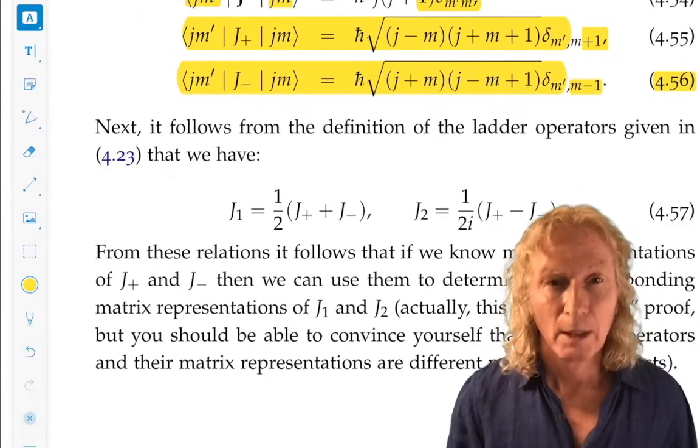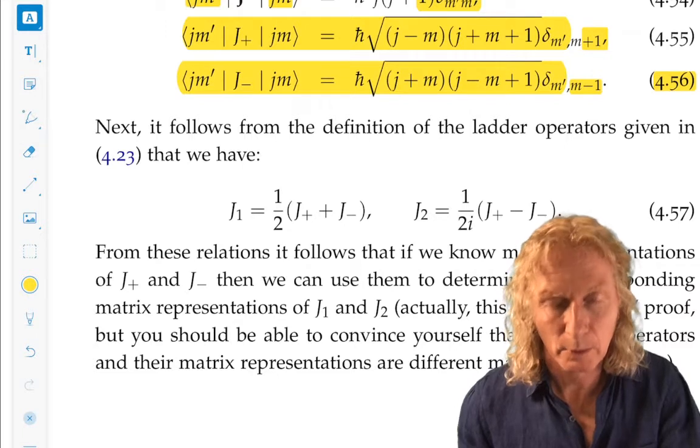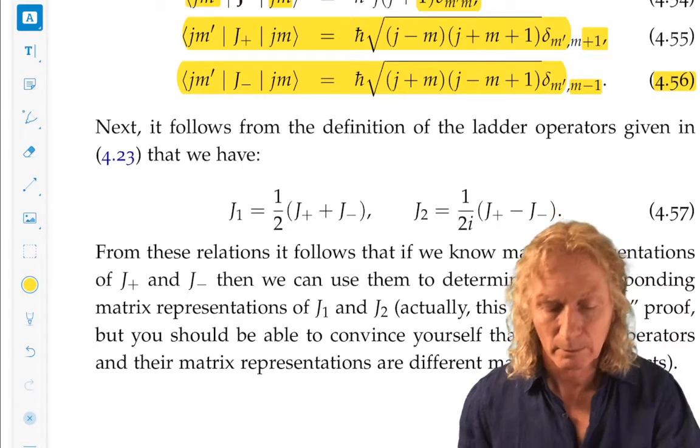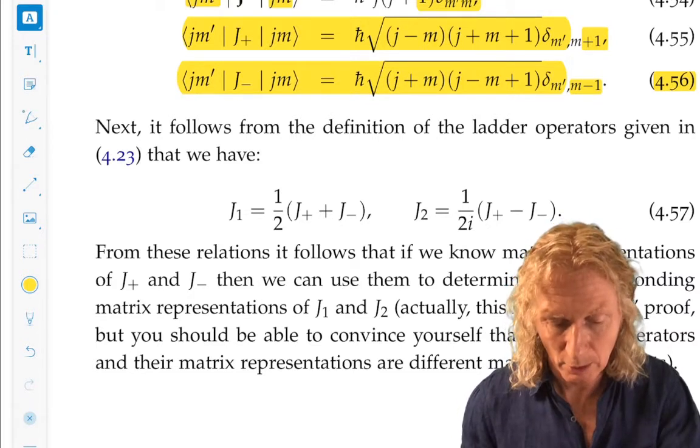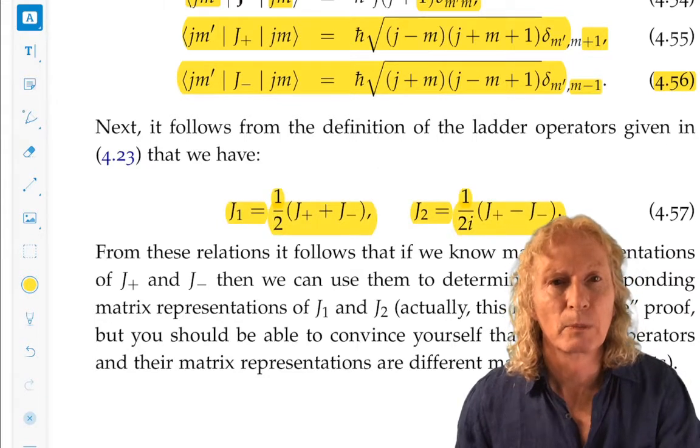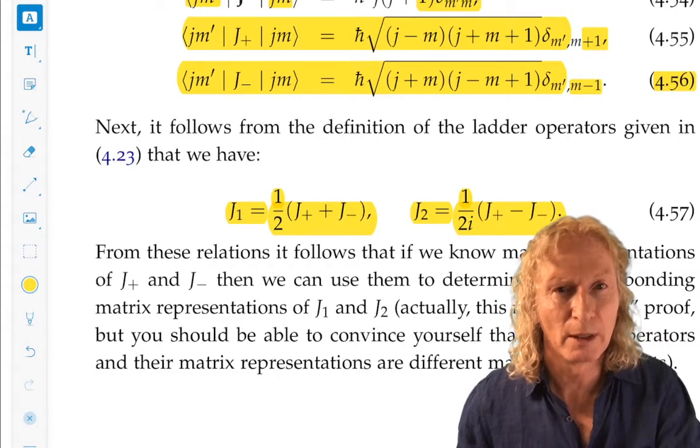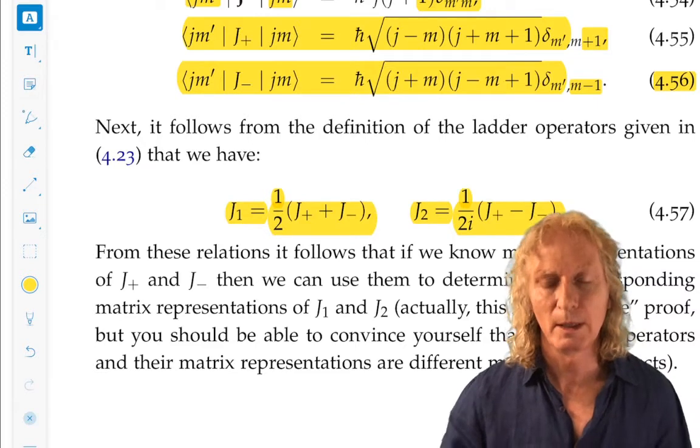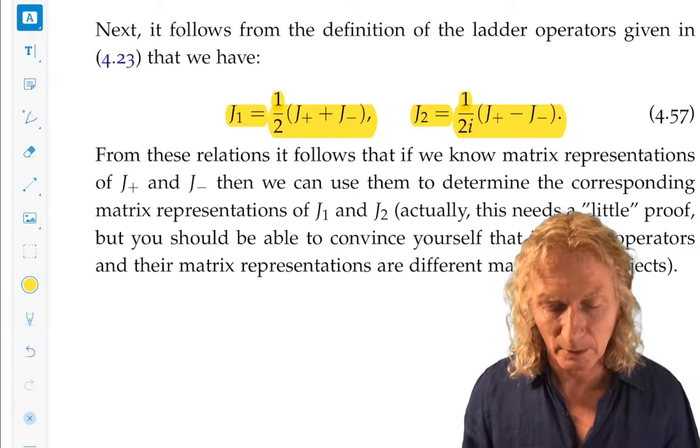So, if we know these matrix elements associated with jplus and jminus, we can get the matrix elements associated with j1 and j2, because we can easily invert jplus and jminus for j1 and j2. jplus is j1 plus ij2, j minus is j1 minus ij2, and so it's easy to see where these come from.